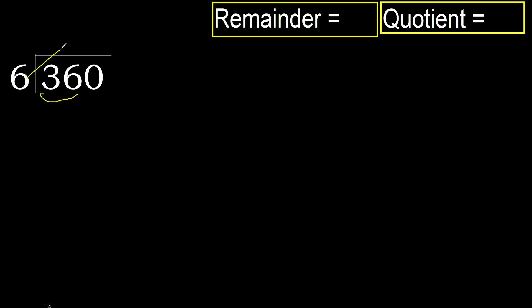Therefore, with 36 — 6 multiplied by which number is nearest to 36, but not greater? 6 multiplied by 7 is 42. 42 is greater. Multiply by 6: 36. It's not greater.